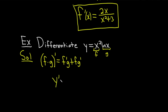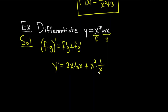So y prime equals: the derivative of the first, which is 2x, times the second, which is ln x, plus the first, which is x squared, times the derivative of the second, which is 1 over x. We get some cancellation with the x's, so we end up with y prime equals 2x ln x plus x, since x squared times 1 over x equals x.